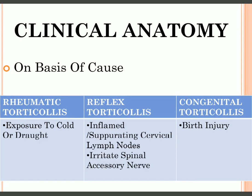There are three types of torticollis based on cause. If caused by exposure to cold air or a draft of cold air, it is called rheumatic torticollis. If caused by infection or pus formation in the cervical lymph nodes irritating the spinal accessory nerve, it is reflex torticollis secondary to cervical lymph node infection. If caused by birth injuries, it is congenital torticollis.